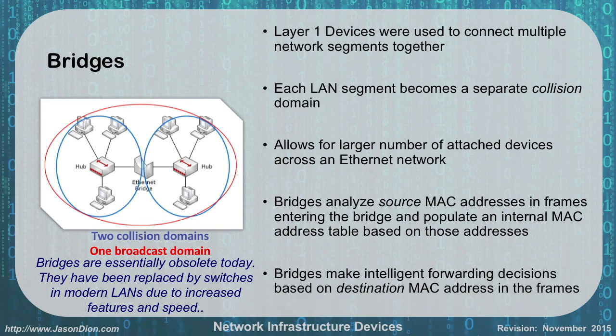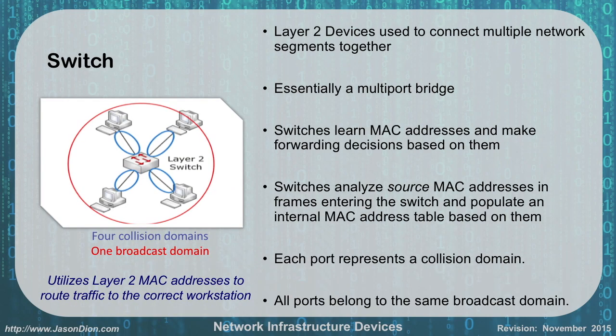Switches replaced bridges because a switch is essentially a hub with a bridge on every port. A switch is a layer 2 device because it deals with MAC addresses — it is essentially a multi-port bridge. Every port on a switch is its own collision domain, as noted by the blue circles coming off of each port.